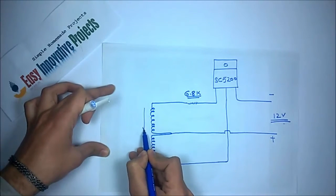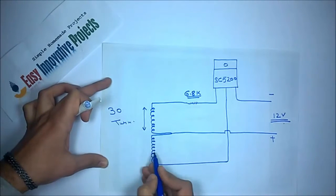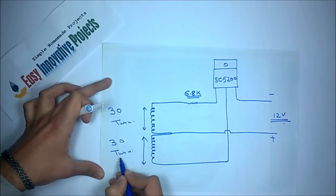After 30 turns, make a 3 inch loop for the center terminal and again 30 turns.